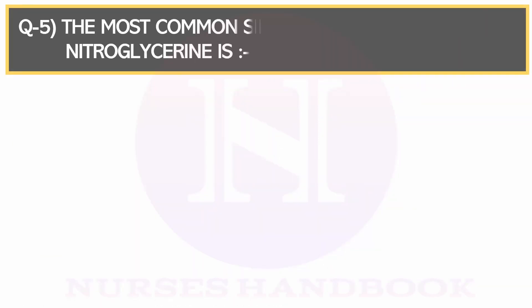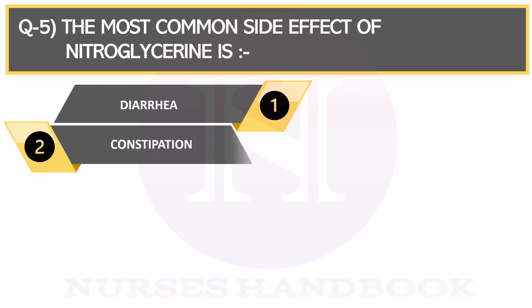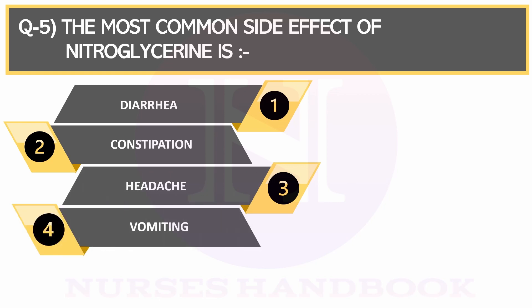Question number 5. The most common side effect of nitroglycerin is Option 1: Diarrhea, Option 2: Constipation, Option 3: Headache, and Option 4: Vomiting.